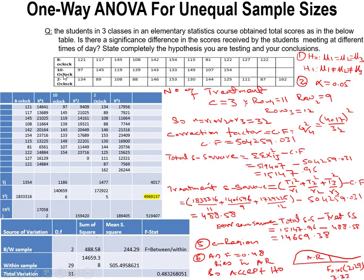At 10 o'clock, they collected another sample — another group. In this sample, the total number of observations are 9. Similarly, in the third group, they collected another sample, which is sample 3, collected at 2 o'clock. In the third sample, there are 12 observations.